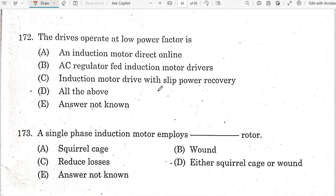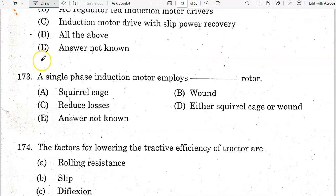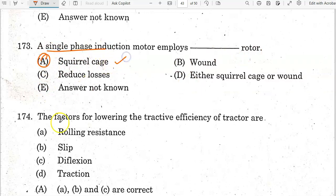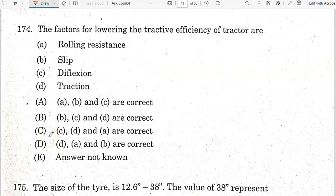A single phase induction motor employs a squirrel cage rotor. The factors for lowering tractive efficiency include rolling resistance, slip, and deflection of traction.